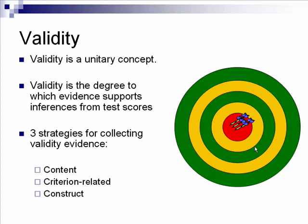This example gets at the concept of validity, which can be tricky for many students to understand. Validity is a unitary concept — it simply answers the question: am I measuring what I say that I'm measuring? Another way to look at it is whether we have support that the inferences from our test scores represent what we're supposed to be measuring. In general, we have three strategies for collecting validity evidence: content validity, criterion-oriented validity, and construct validity.